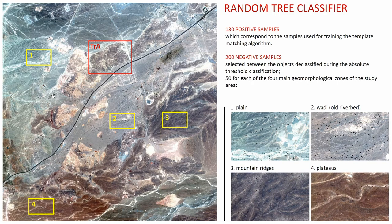The random forest classifier did the big part of the work. I trained it with 130 positive samples — the same samples used to train the template matching — and 200 negative samples. The negative samples were taken from the four main geomorphological areas present in the region: the gravel plane, the valley, the old riverbed in the middle, and the mountain ridges and plateau. This was done to represent the most typical background areas, and also because the cairns, made of the same material as their surroundings, require good representation of possible background variation.